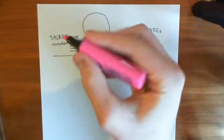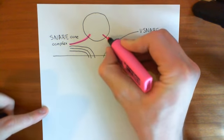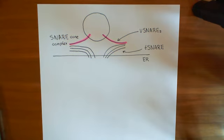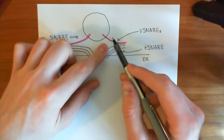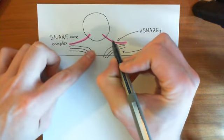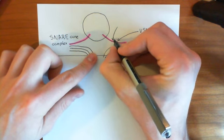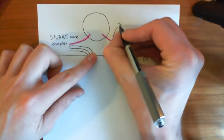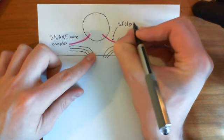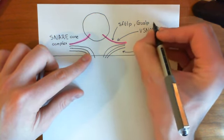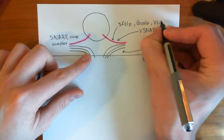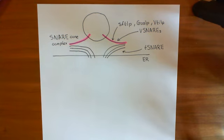Let's talk about the names of these V-snares. There are lots of different proteins that can actually be used as the V-snare for COP1 coated vesicles — only one of them will actually be used at a time, but all three are possible options. One of them is SFT1P, another one is GOS1P, and finally there is VTI1P. These are all proteins that can be used as the vesicular snare contributing this alpha helix into the snare core complex.